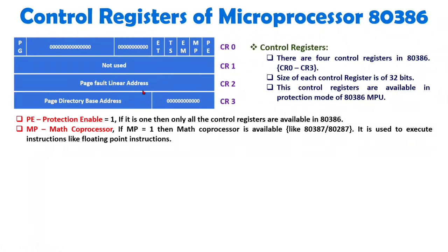Now let us understand the MP bit, that is the Math Coprocessor bit. If this bit equals 1, the math coprocessor is available, and we can execute coprocessor instructions like floating point instructions. With 80386, we can interface an 80387 or 80287 coprocessor. The 80387 is specifically designed as a coprocessor for 80386, but the 80287 — originally designed for Intel's 80286 — can also be interfaced as a coprocessor with 80386.